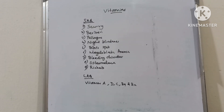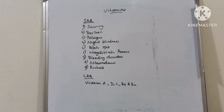Vitamins, short answer questions and clinical cases: scurvy, beriberi, pellagra, night blindness, Bitot's spots, megaloblastic anemia, bleeding disorders, osteomalacia and rickets. Long answer questions: Vitamin A, D, C, B9 and B12.